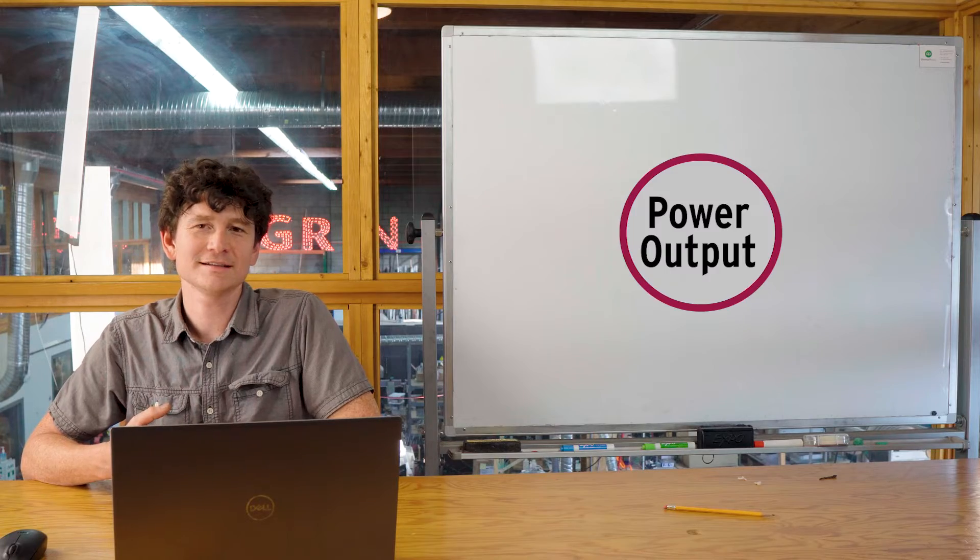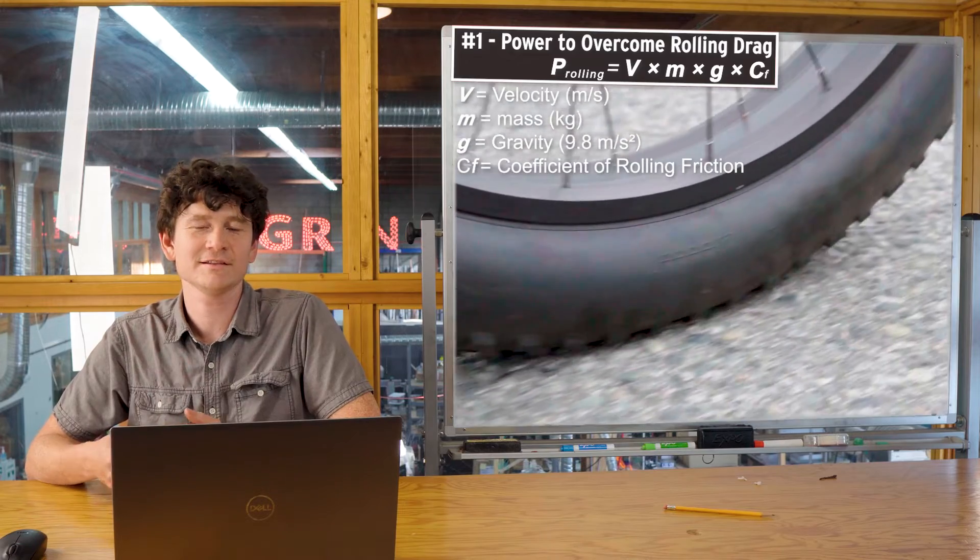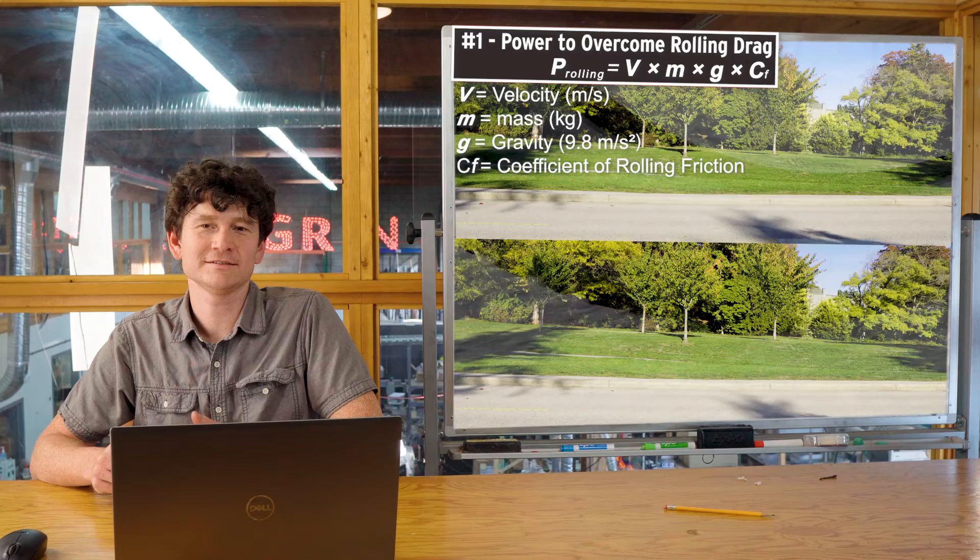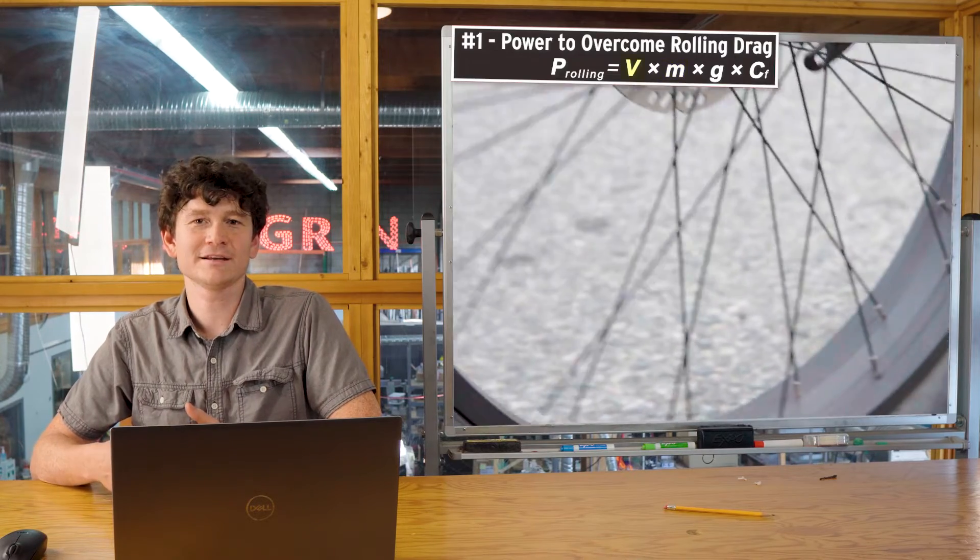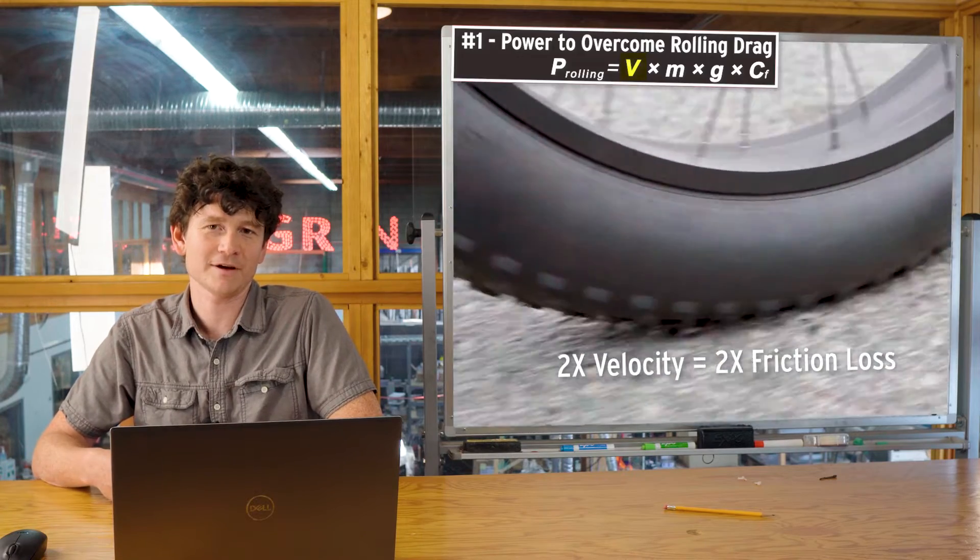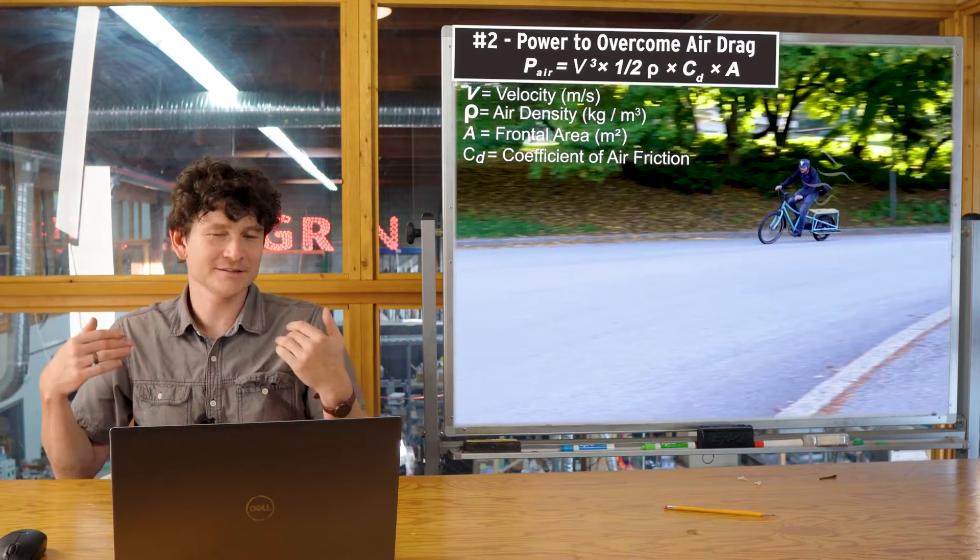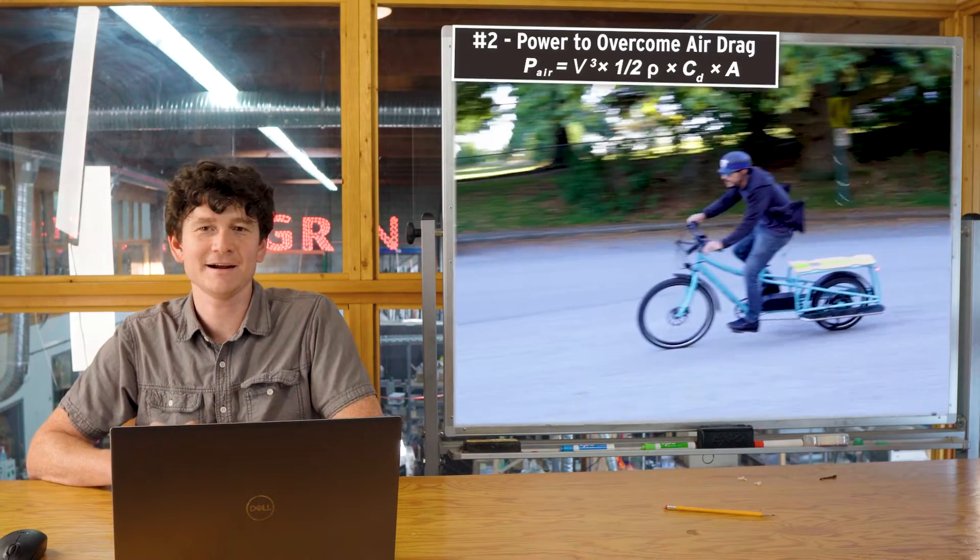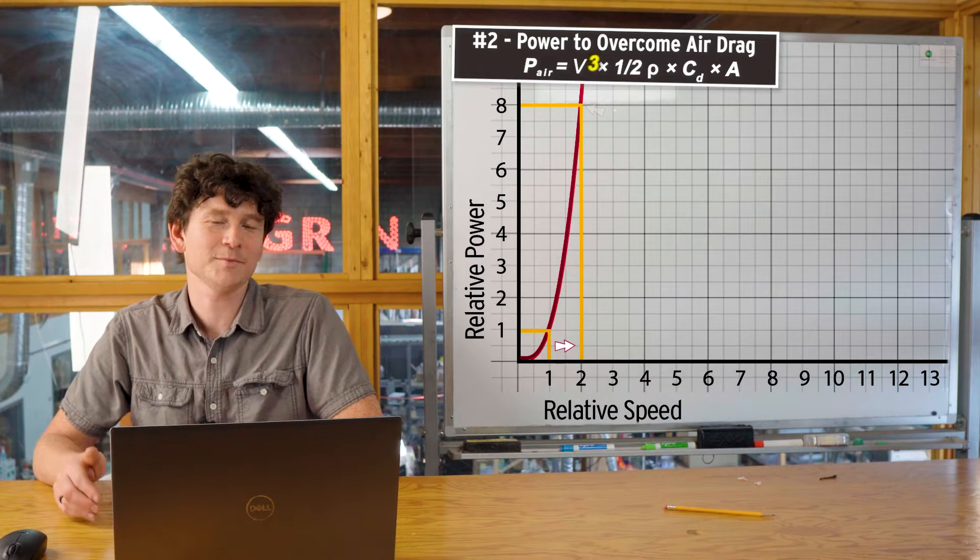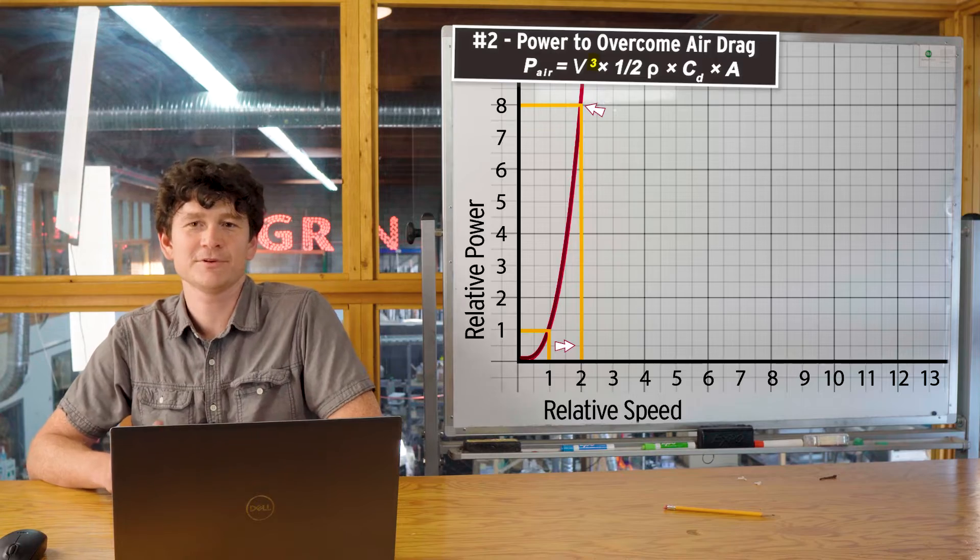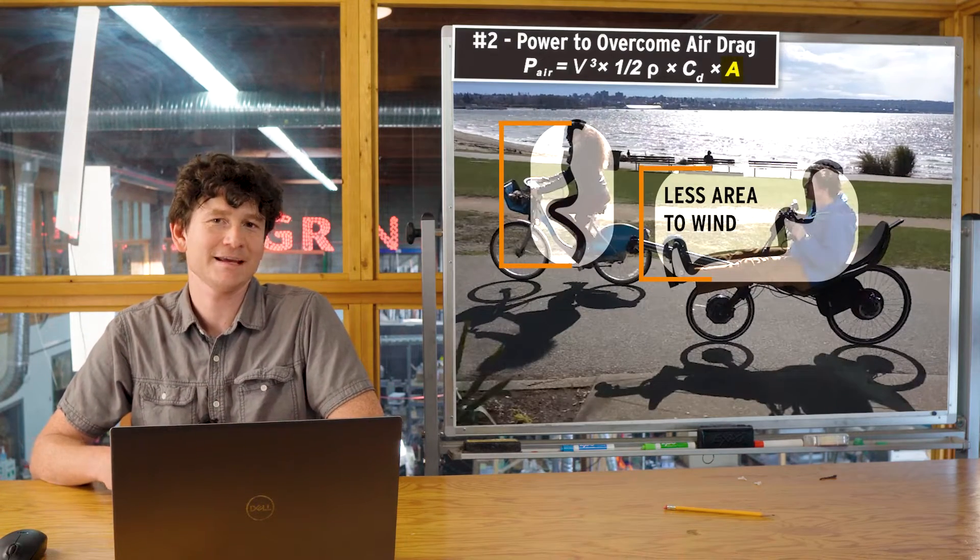The power that goes into moving a bicycle gets dissipated into four different places. The first is rolling friction - power used to overcome the frictional drag between the tire and the ground. Rolling frictional losses increase with the weight of the vehicle. If you double the weight, you double the watts going into friction. They also increase with speed - double the speed, double the watts needed to overcome friction. The second major component is air drag, all the turbulence of the atmosphere that flows around the person and vehicle as they move through the air.